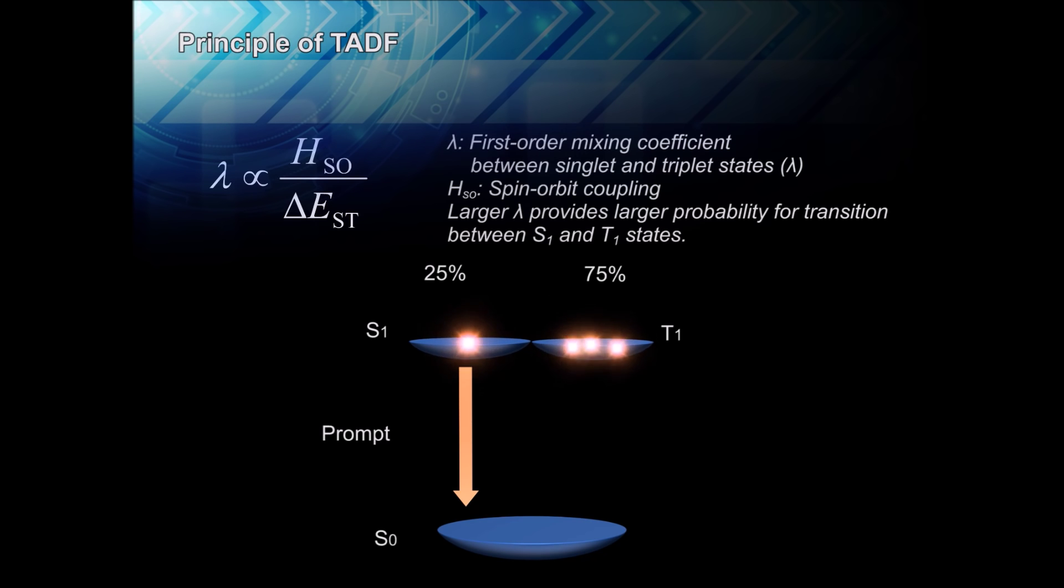Most importantly, a small delta EST is achievable in organic materials without the use of a heavy metal.